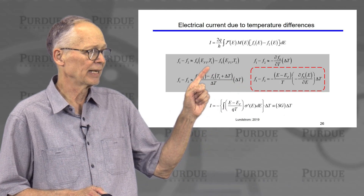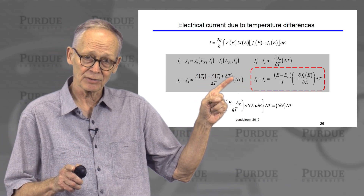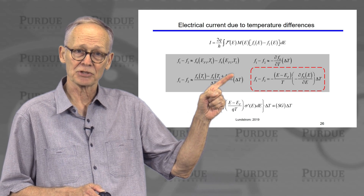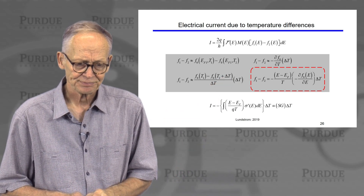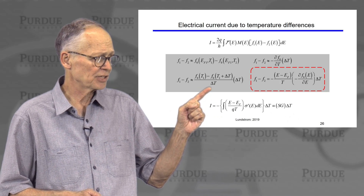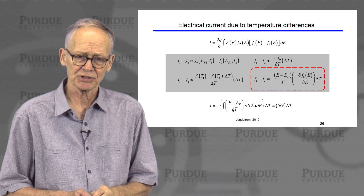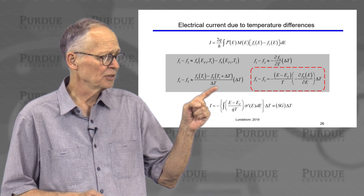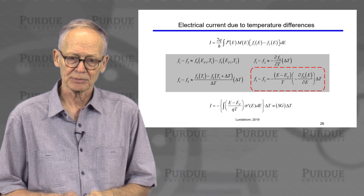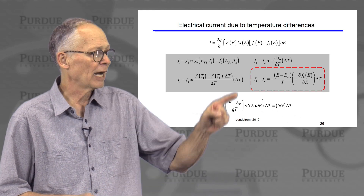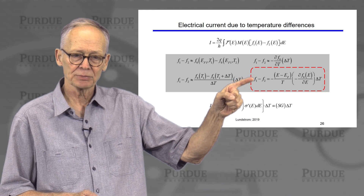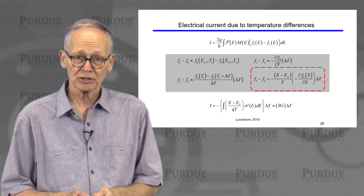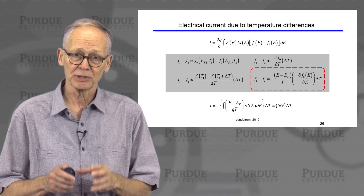When I subtract F1 minus F2, both of them have the same Fermi level — the first one has a temperature T1, the second one has a temperature T2. I could divide by the change in temperature and multiply by the change in temperature, and recognize that I have a finite difference approximation to the derivative of the Fermi function with respect to temperature. So I can write F1 minus F2 as proportional to minus the derivative of the Fermi function with respect to temperature times the difference in temperature between the two contacts.